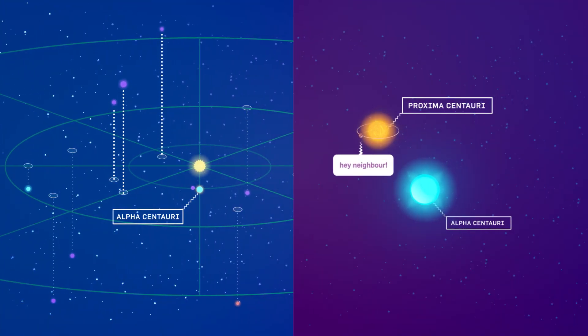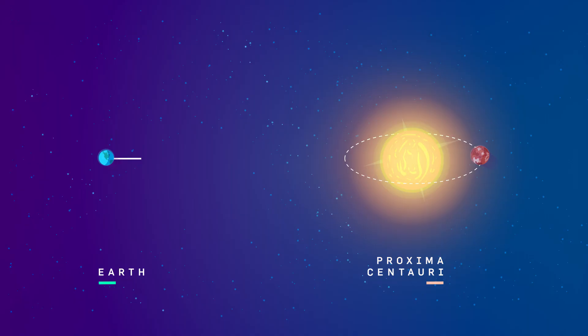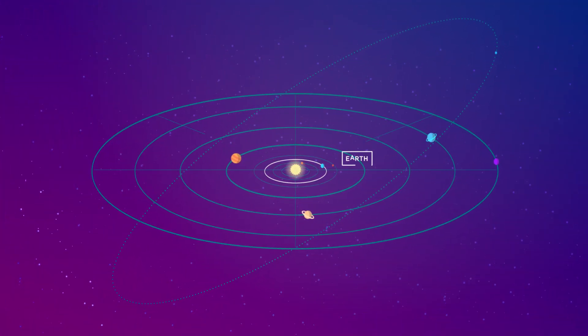Last year, we geeked out about Proxima Centauri b, a possibly life-supporting planet 4.2 light-years away. But we should have focused on a discovery even closer to home.